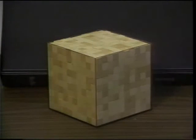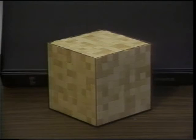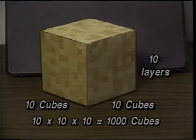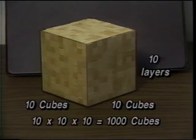The volume of a rectangular right prism can be measured by determining how many cubes are needed to fill it. One way is to count how many cubes cover the base and then count how many layers of these cubes are used to reach the height of the prism. Let's take a look at this prism. It takes 10 times 10, or 100 cubes, to make one layer that will cover the base, and 10 layers to completely fill the solid, or 10 times 10 times 10, or 1000 cubes, to fill the solid.